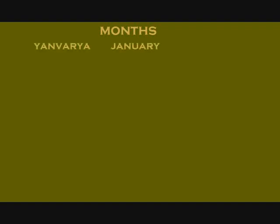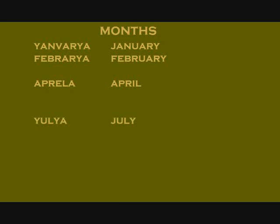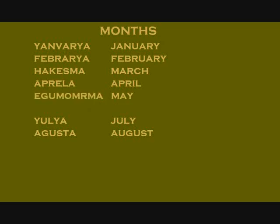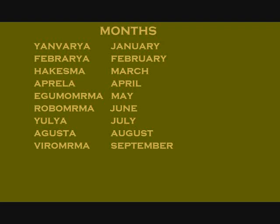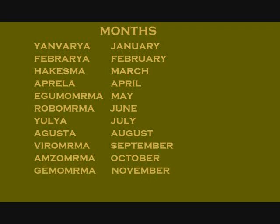Some of the months are simple transliterations from English and other languages: janvarria for January, februarria for February, aprila for April, julia for July, and augusta for August. Others are translations of the original meaning: March is hakesma meaning conflict, May is egumomorma meaning fertility, June is robomorma meaning royalty. The last four months are named by their numerical order in the year: September is viromorma meaning ninthness, October is amzomorma meaning tenthness, November is gemomorma meaning eleventhness, and December is trutomorma meaning twelfthness.